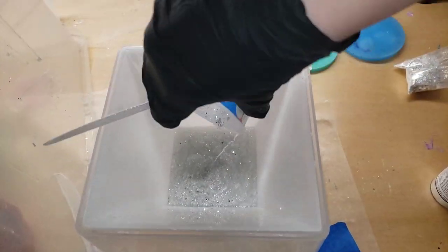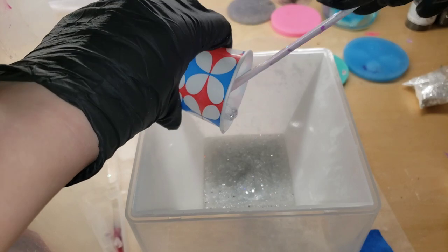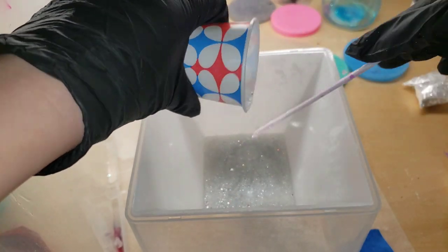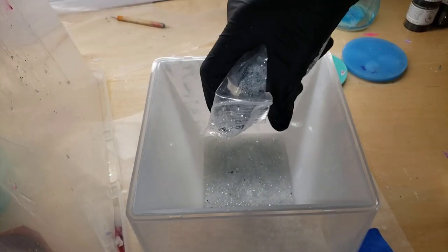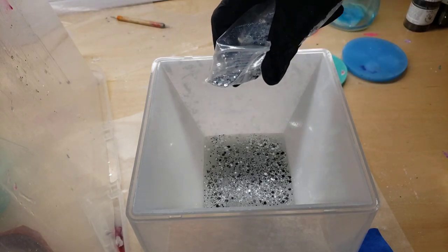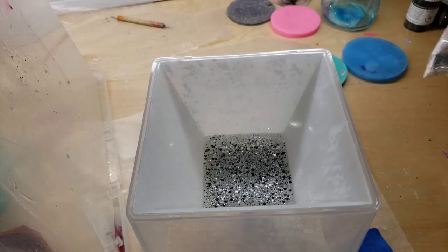Just poured it into my mold, and that's it. I did spray it with some 91% isopropyl alcohol to pop bubbles, sprinkling on some more of the Mirror Mirror glitter. Let it dry for 24 hours.